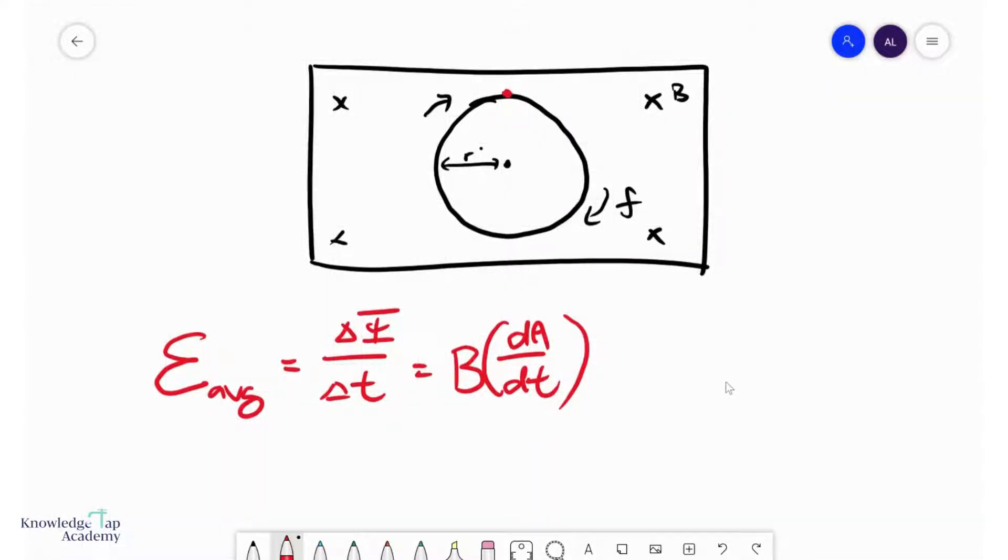It's only one turn, if you like. And the amount of area is simply pi r squared divided by the period, which turns out to be B pi r squared f. So this is how you calculate the EMF induced in Faraday's disk.